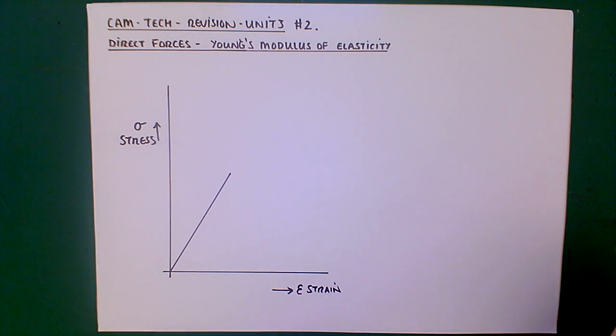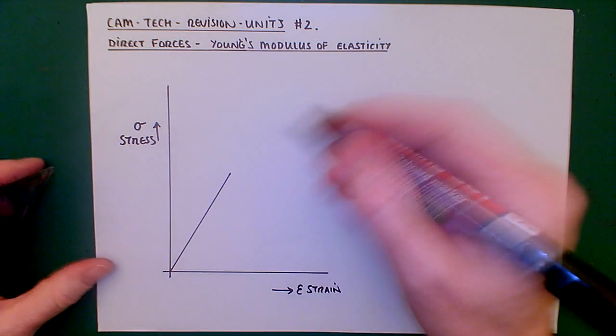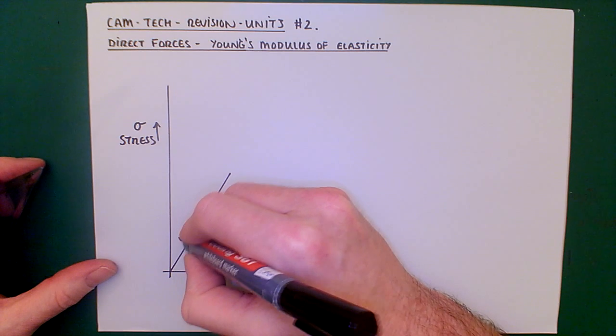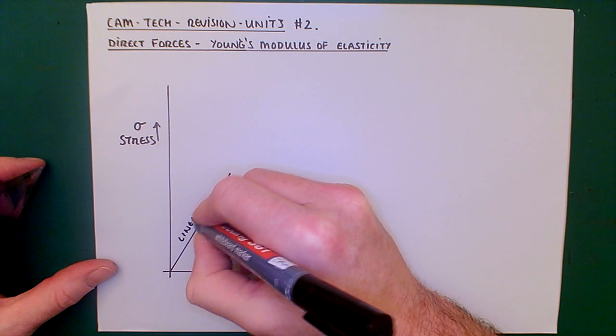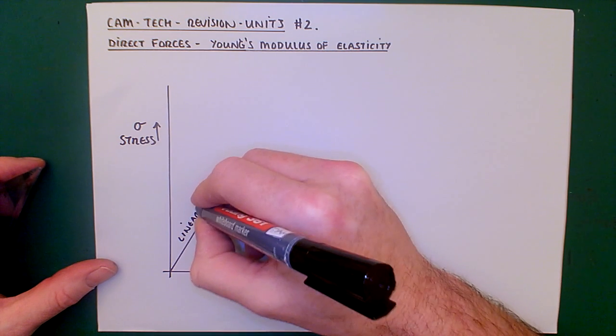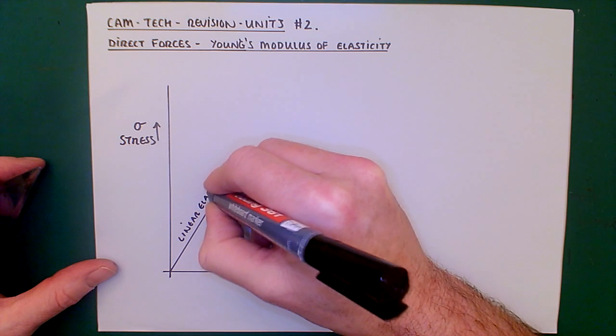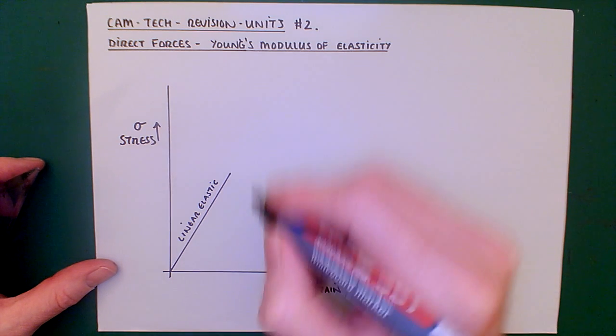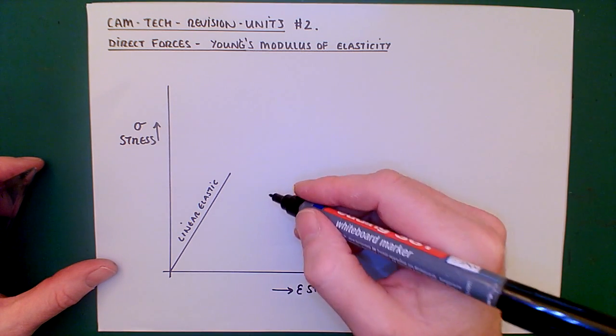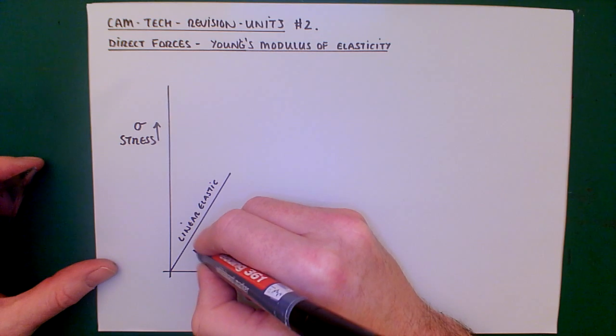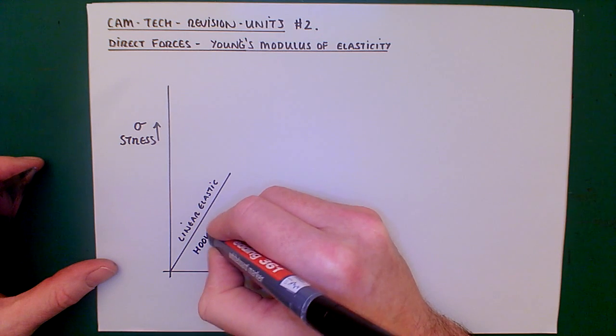Now, under certain circumstances, or under normal circumstances, you achieve what's called a Linear Elastic Change Under Load. Something that obeys something that might be familiar with Hooke's Law.